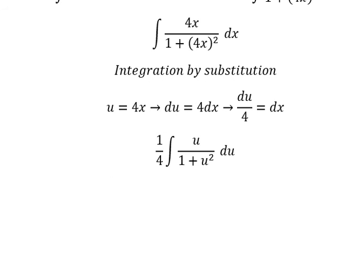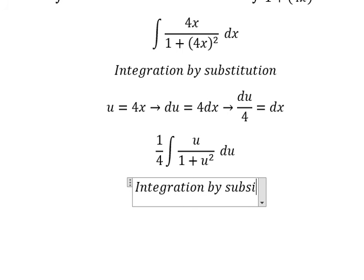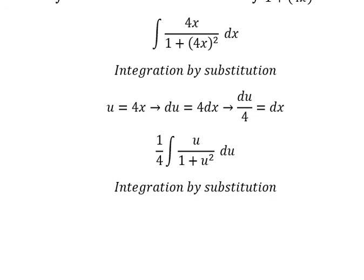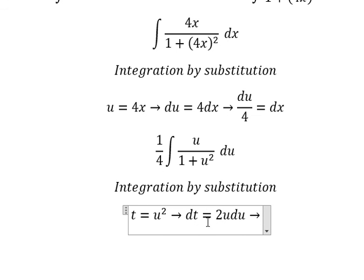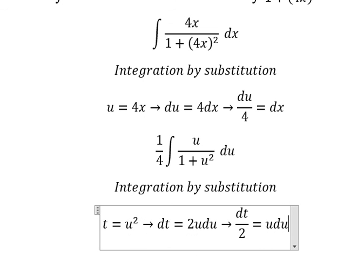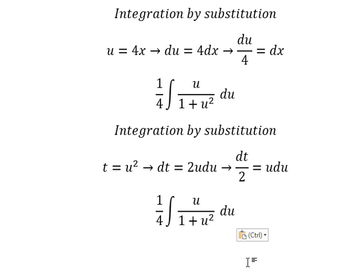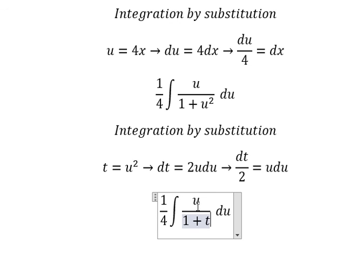Next, we can use another integration by substitution, so I will put t equals u squared. Then we need to do the first derivative for both sides, and we divide both sides by 2. So u is replaced by its expression, and t replaces u squared, with du replaced accordingly.